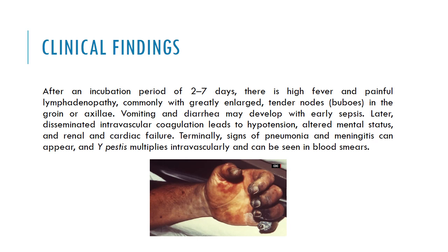Regarding clinical findings of plague: after an incubation period of two to seven days there is high fever and painful lymphadenopathy, with the affected region feverish and painful. Commonly there are greatly enlarged tender nodes in the groin or axilla, which gives the name bubonic plague to the disease. Vomiting and diarrhea may develop with early sepsis. Disseminated intravascular coagulation leads to hypotension, altered mental status, and renal and cardiac failure. Terminally, signs of pneumonia and meningitis can appear, and Yersinia pestis multiplies intravascularly and can be seen in blood smear.